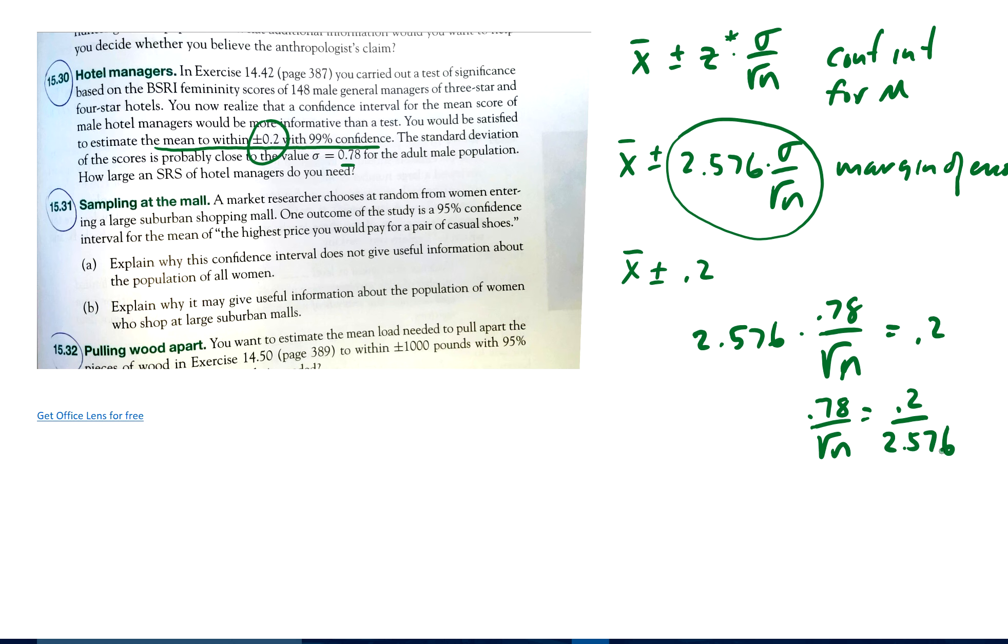And if I do that, I want to always not round until the very end as much as possible. Divide it by 2.576. So I get 0.78 over square root of N equals 0.0776.